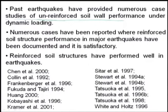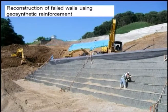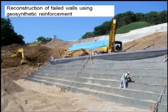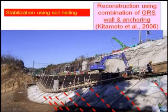Reinforced soil structures have performed well in earthquakes. Reconstruction of failed walls using geosynthetic reinforcement is shown here. Another example shows reconstruction using a combination of geosynthetic reinforced retaining wall structures and anchoring. Anchoring has been made at specific points along with geosynthetic stabilization using soil nailing — these are all called anchoring by means of soil nailing.